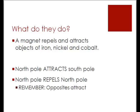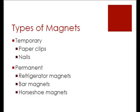Repelling just means that they will not come together by themselves — you would have to force them together. There are different types of magnets: temporary and permanent. Permanent magnets are objects that have their own magnetic field. These would be bar magnets, horseshoe magnets, and everyday magnets like refrigerator magnets.